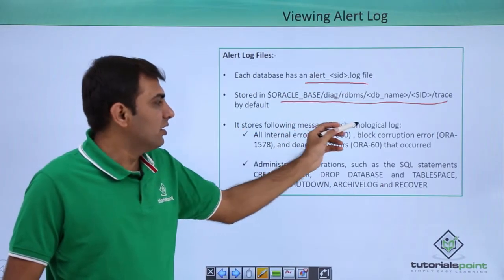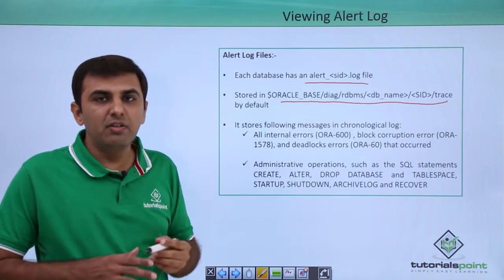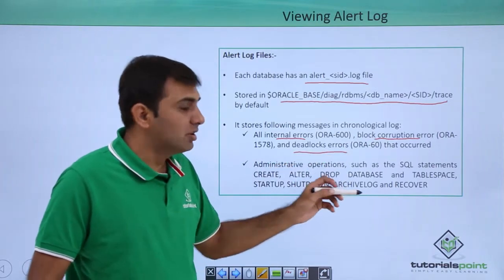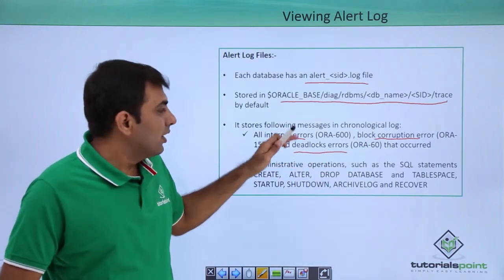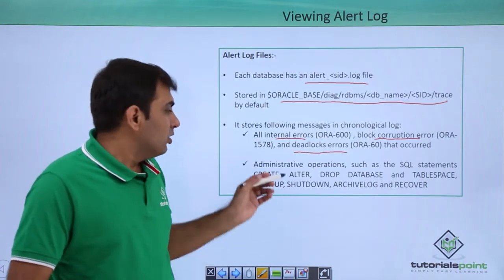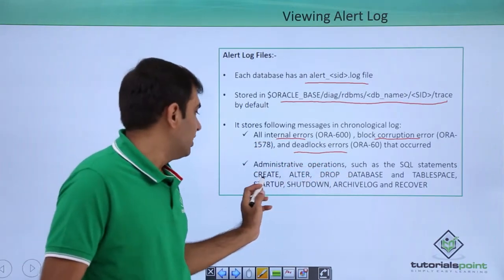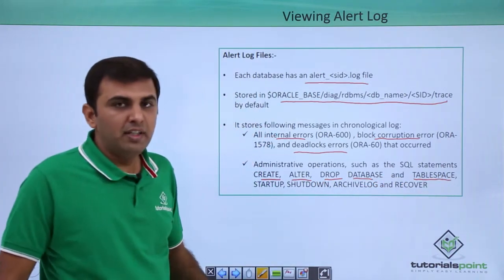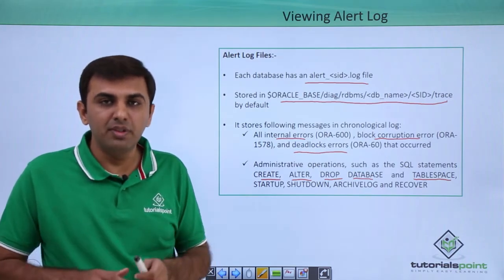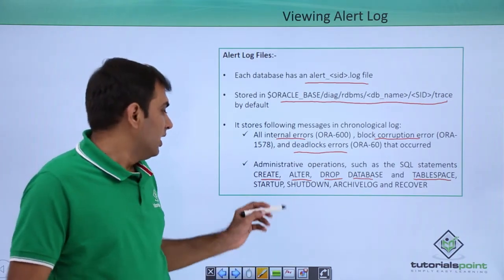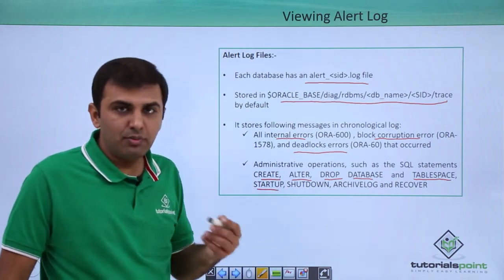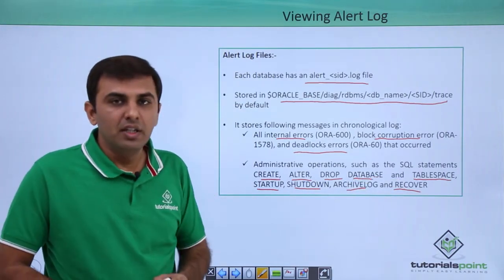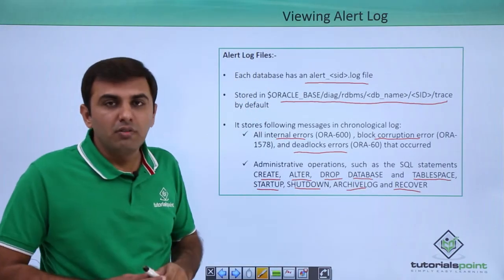It stores the following messages in the chronicle log. Any kind of error in Oracle database — like internal errors, block corruption errors, or deadlock errors — are stored in the alert log file. It also stores admin structure operations such as create, alter, or drop database or tablespace. It also records starting up your database, shutting down your database, archive log, and recovery activities.